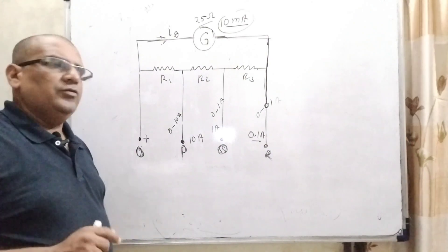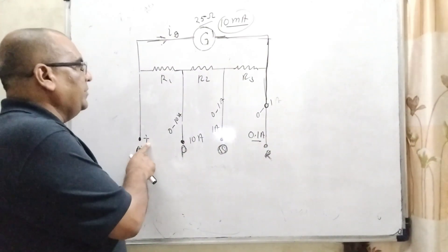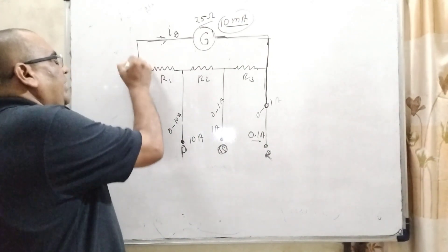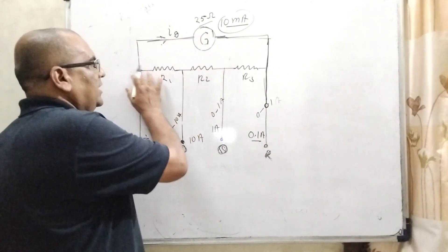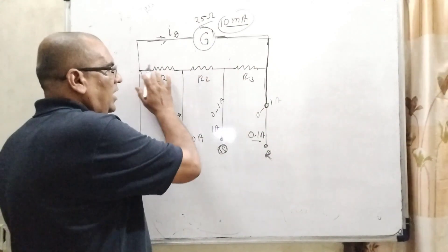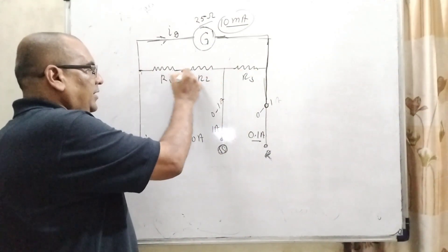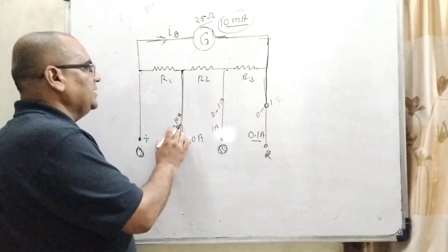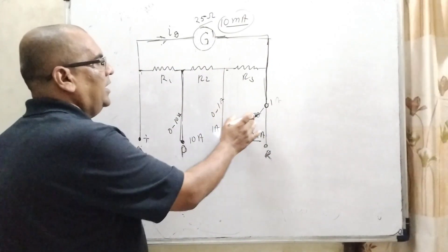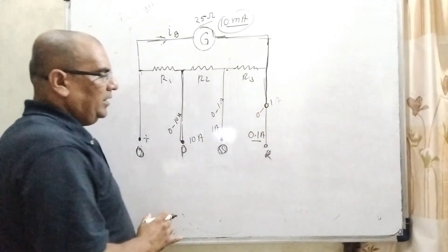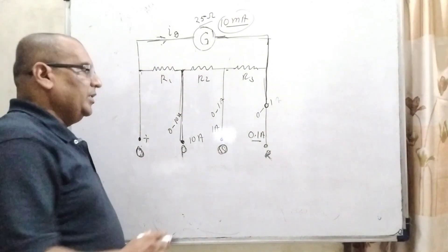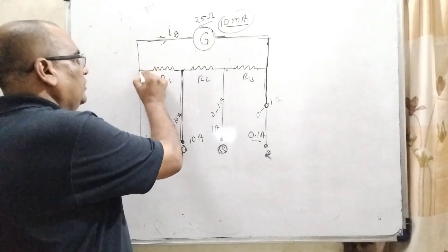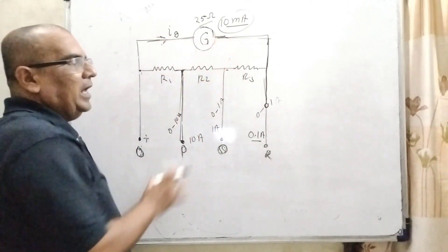First of all, we have to understand what the question says. We are given terminals connected in two ways: first, the galvanometer is connected, and second, R1, R2 and R3 resistances are connected. Three current ranges are given: 0 to 10 ampere, 0 to 1 ampere, and 0 to 0.1 ampere. We take them one by one. As we know, this circuit is in parallel.